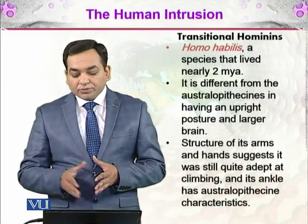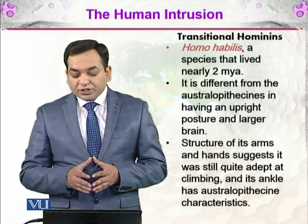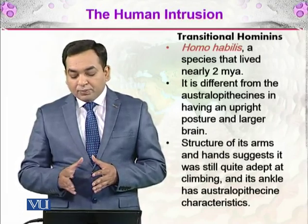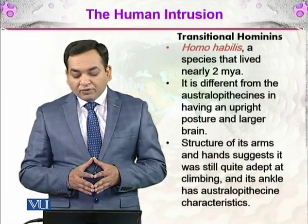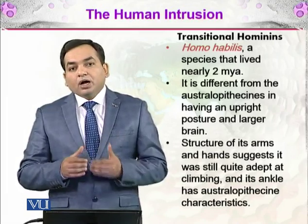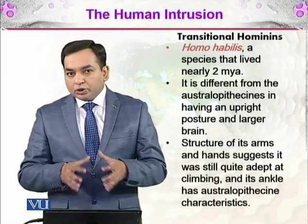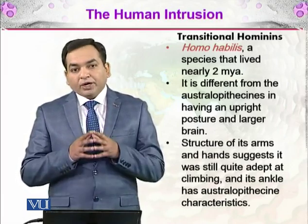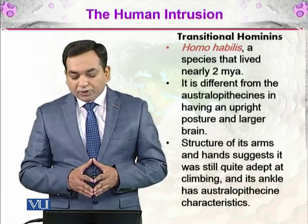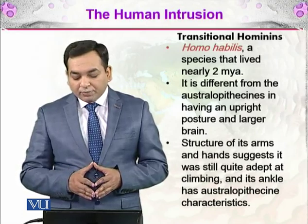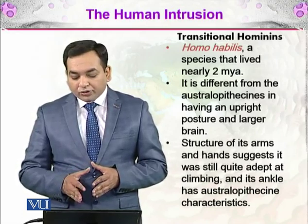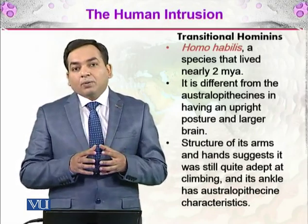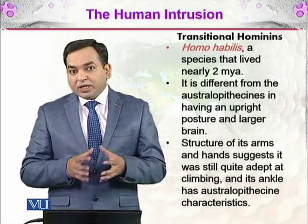The transitional hominins include Homo habilis, a species that lived around 2 million years ago. It differs from Australopithecus in having an upright posture and a larger brain — walking on two feet rather than four. The structure of its arm and hand suggests it was still quite adept at climbing, and its ankle retained Australopithecus-like characteristics, meaning it could grasp things with its ankles as well.